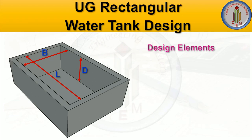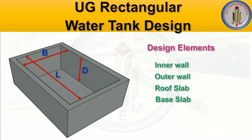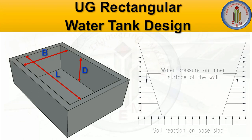After the dimensions, we need to look into the design elements — the structural elements we are going to design. The first one is the inner wall: the face near the water is the inner wall, and the face near the earth is the outer wall. Both need to be designed. Then the roof slab, which covers the tank, and the base slab at the base of the tank. These four elements are the major ones we need to design.